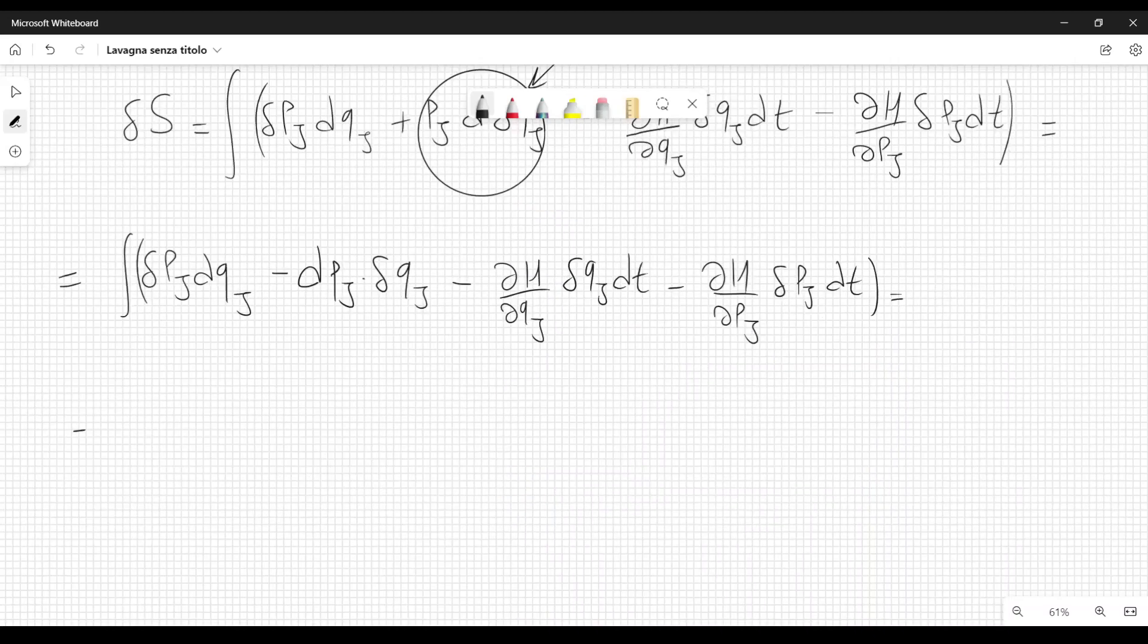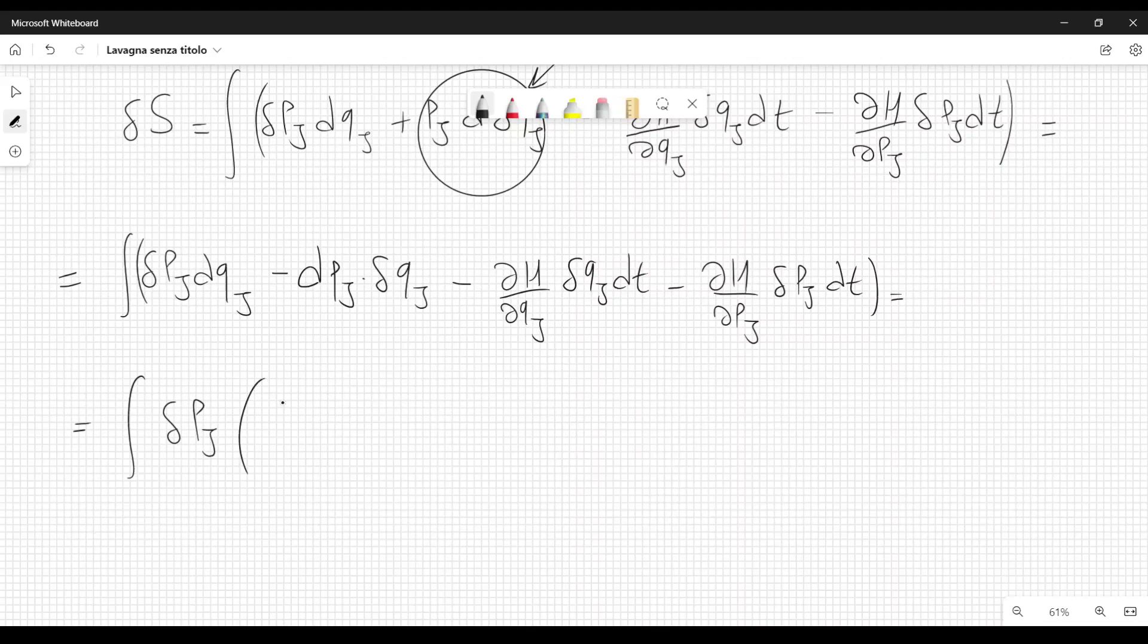And now we are going to rewrite it like this. We have variation of p j, which multiplies dq j minus derivative of the Hamiltonian with respect to p j dt.